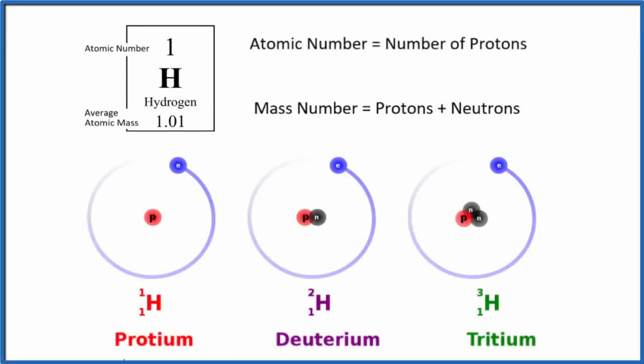I was asked how to find the atomic number for protium, deuterium, and tritium. These are all isotopes of hydrogen.